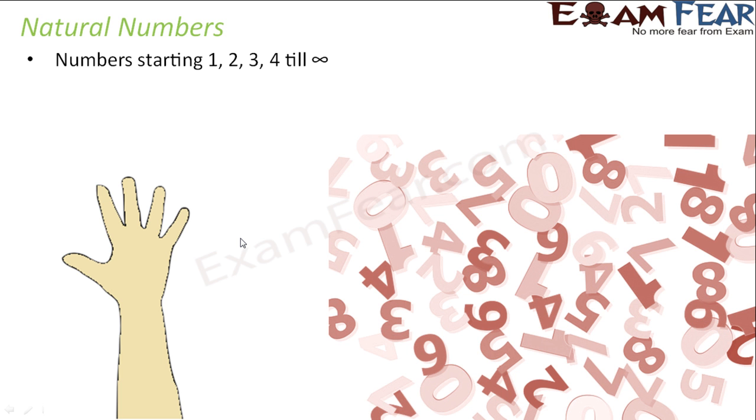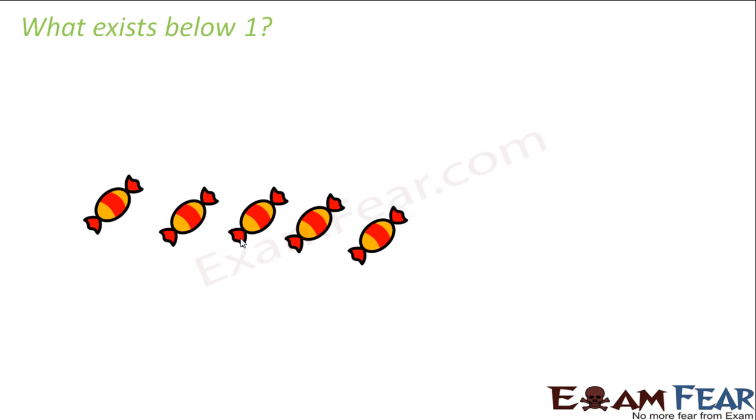So all of these numbers like 1, 2, 3, 4, 5 till infinity are all natural numbers. Now you might ask, what exists below 1? Below 3 exists 2, below 2 exists 1. What is there before 1?